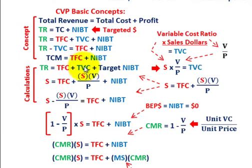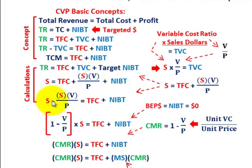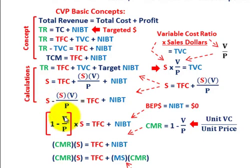We can substitute that amount in for total variable cost in our equation. Total variable cost equals sales times unit variable cost divided by unit price. Then moving this over, we have: sales minus (sales times V/P) equals total fixed cost plus net income before taxes. Factoring out S, we get: S times (1 − V/P) — that's the contribution margin ratio — equals total fixed cost plus net income before taxes.